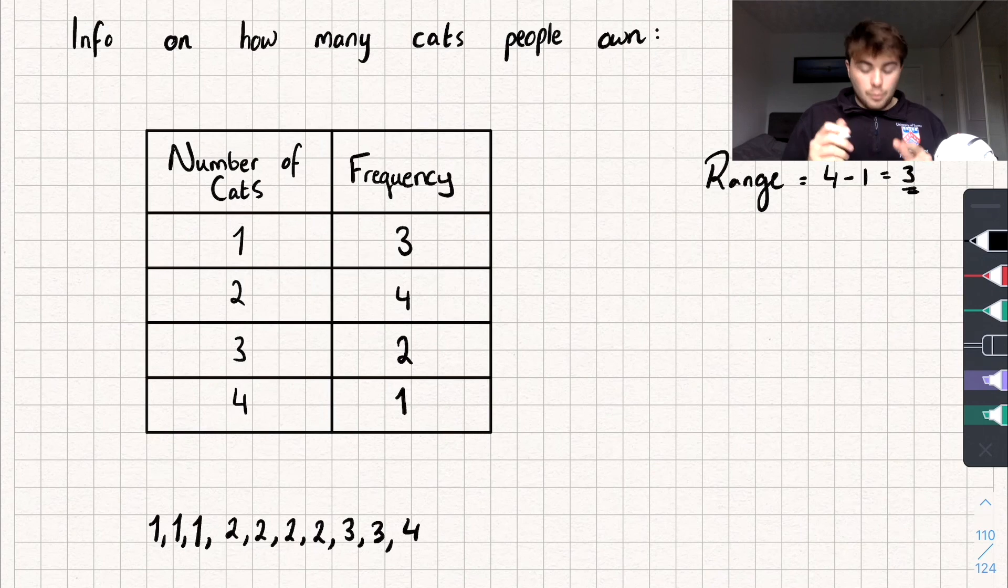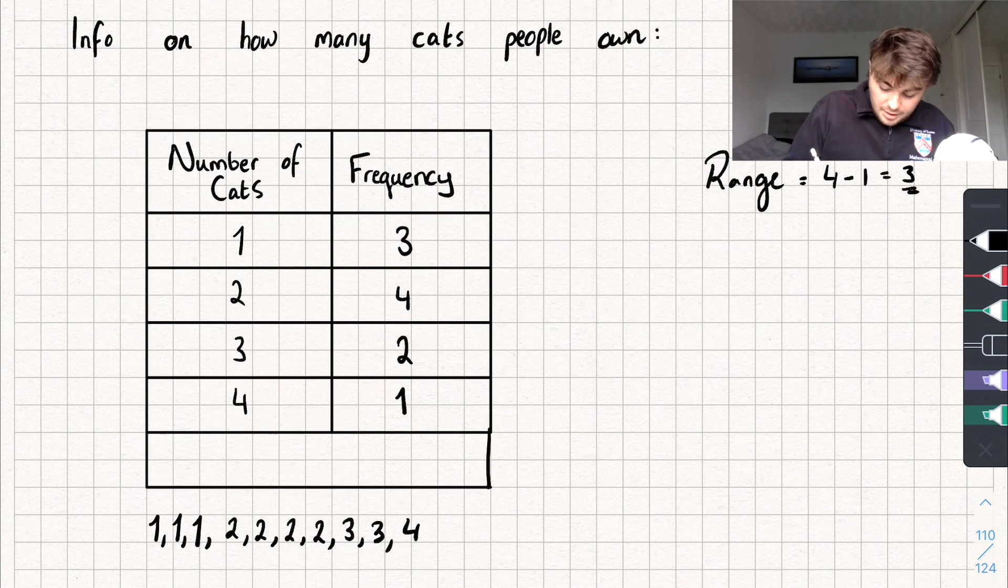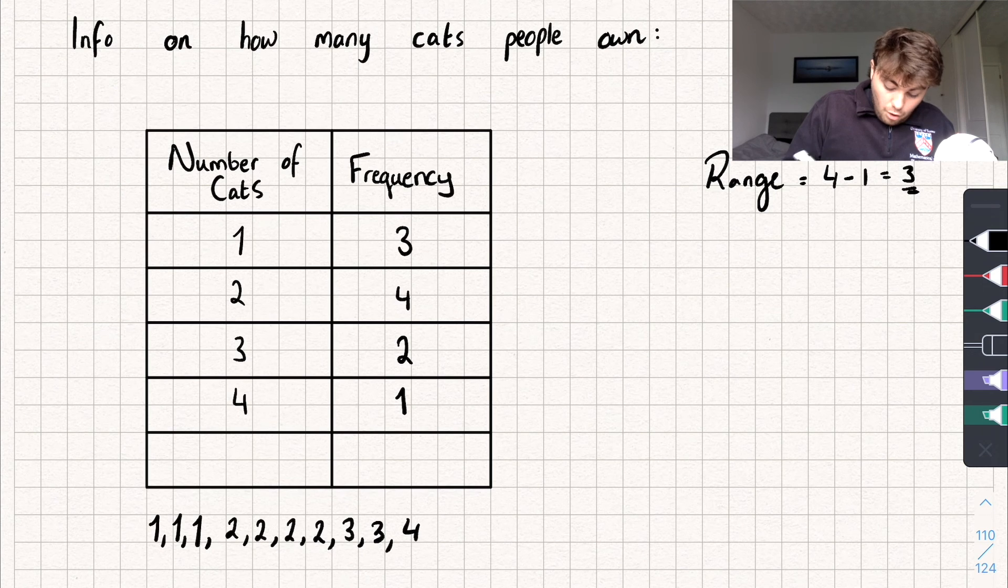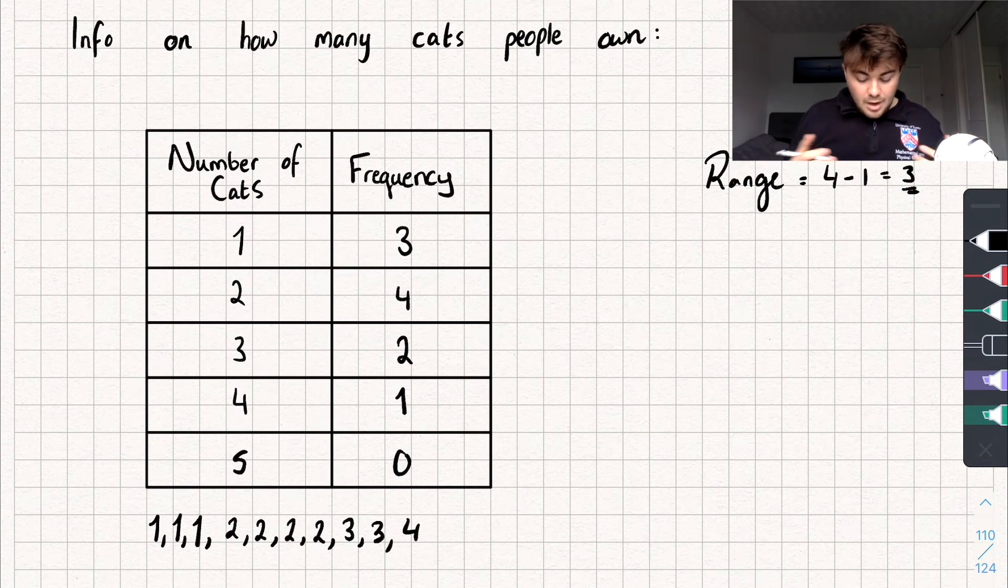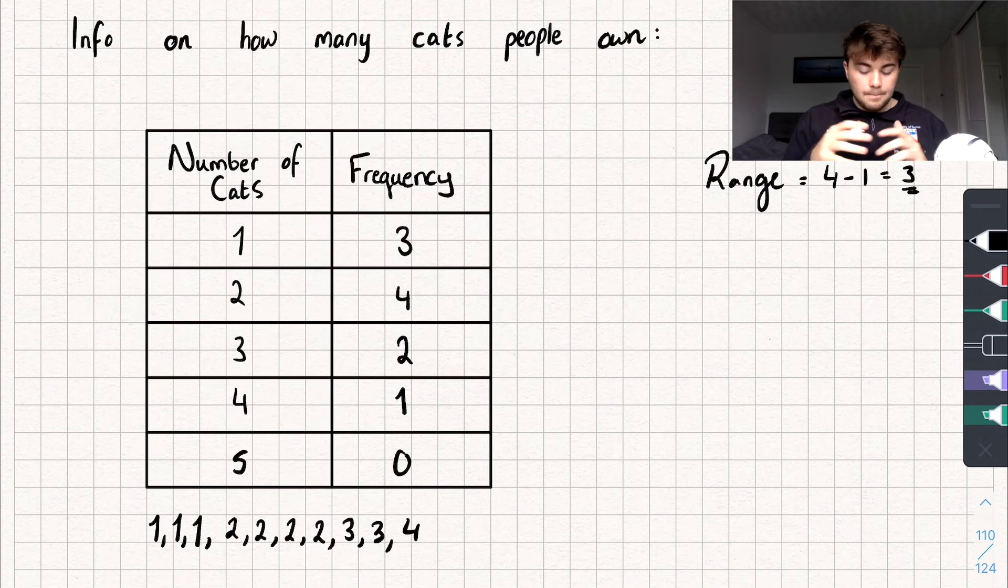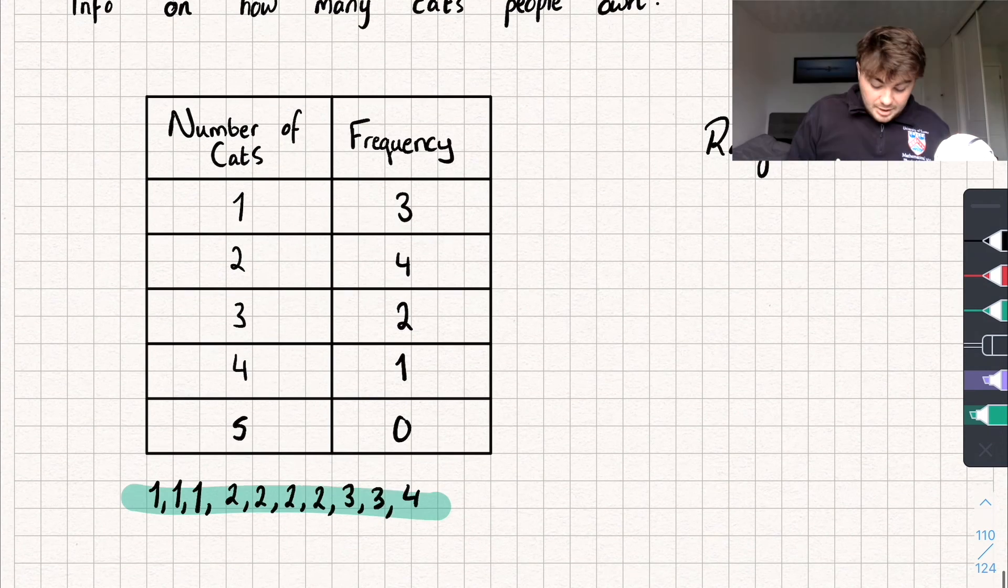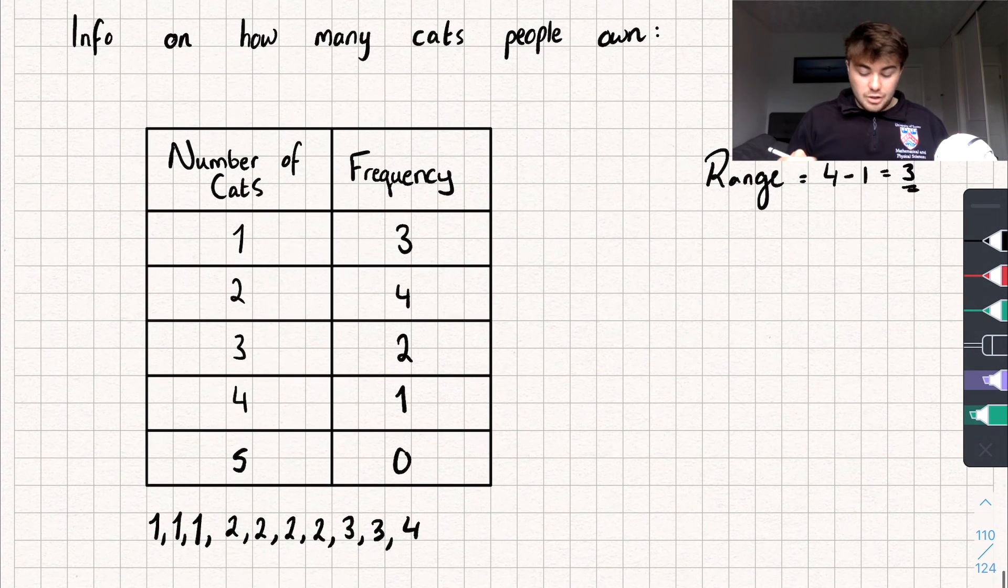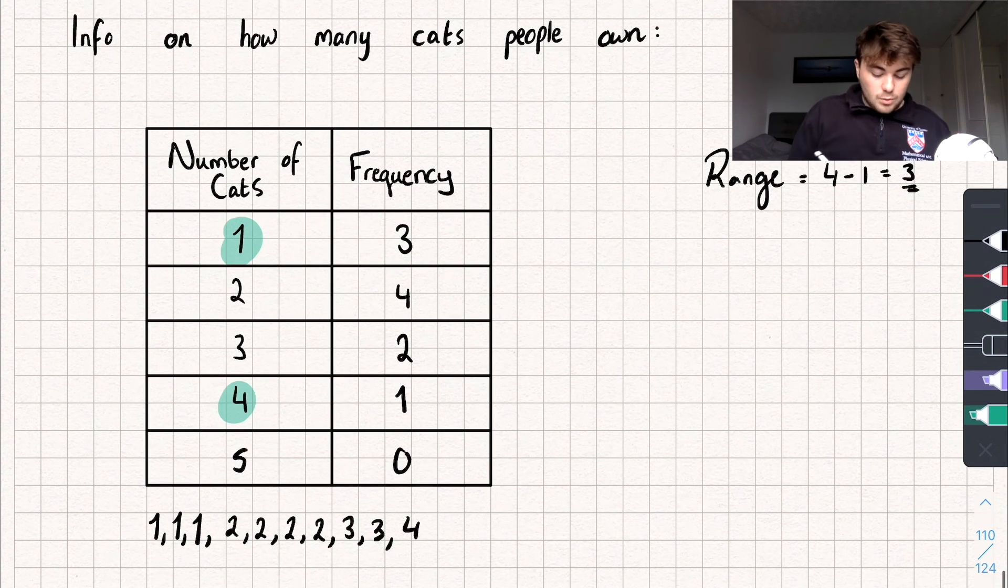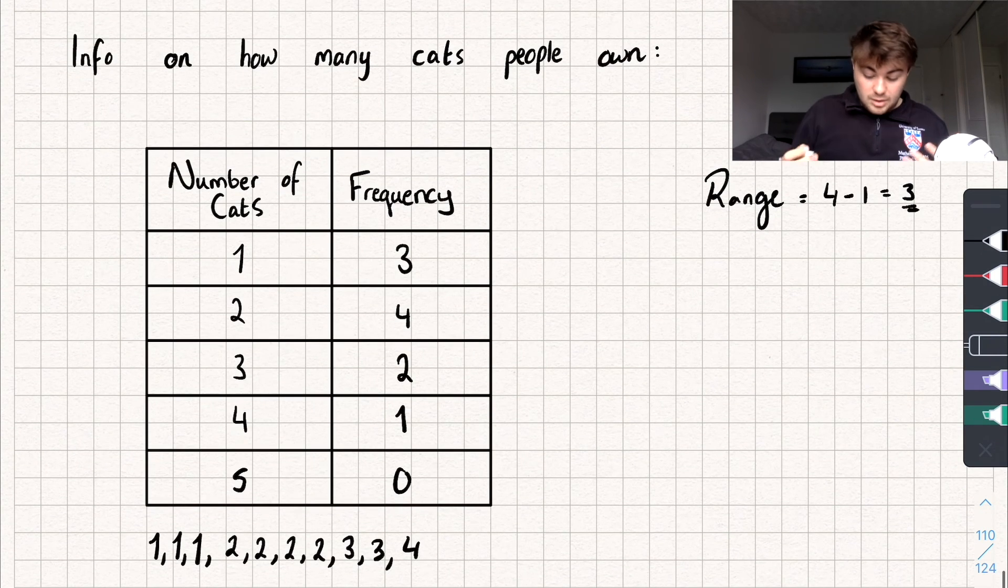But you do need to be careful when you're doing this, because your table might not look as nice as mine. You might have an extra row with 5 cats or whatever your data is representing, and you might have the frequency of it being zero. If that's the case you don't have any fives in your data because the frequency is zero. So if you were to write out a list of data it would still look the same as that. And therefore when we're calculating the range we're still only doing 4 subtract 1. So you need to be careful of that when you're calculating some of your values.